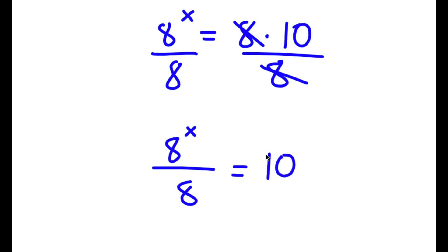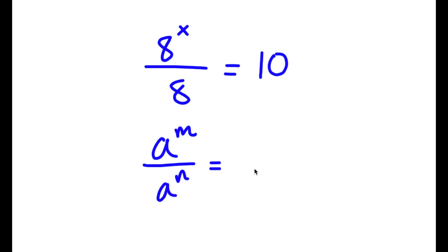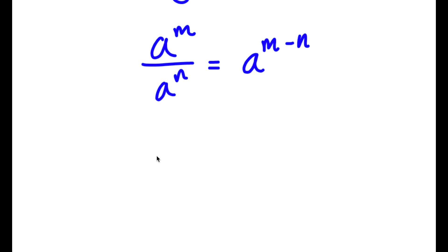That equals 10. Now if I have something in the form a to the power of m over a to the power of n, this is equal to a to the power of m minus n. So 8 to the power of x over 8 — well, 8 is the same thing as 8 to the power of 1 — so I get 8 to the power of x minus 1 is equal to 10.